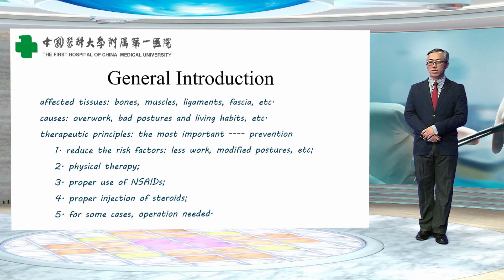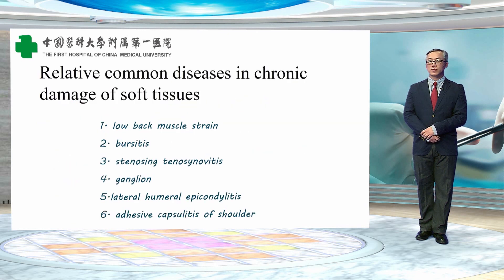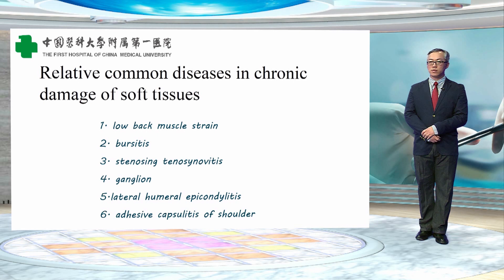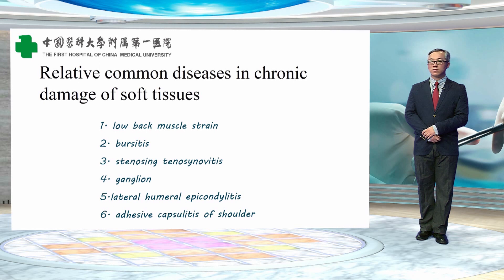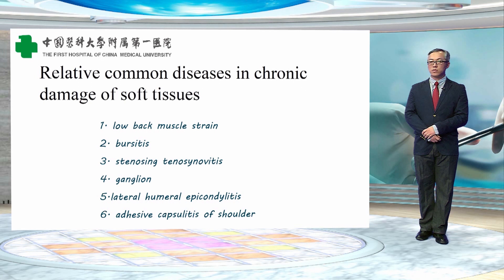The fourth is proper injection of steroids, and fifth, for some cases, operation is needed. The relative common diseases in chronic damage of soft tissues are: first, low back muscle strain; second, bursitis; third, stenosing tenosynovitis; fourth, ganglion; fifth, lateral humeral epicondylitis; sixth, adhesive capsulitis of the shoulder.